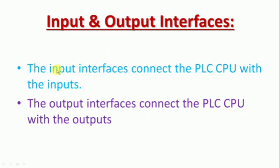Input and Output Interfaces. The output module or input module will connect the PLC to the CPU with input. The input interface will connect the PLC to the CPU to the input interface. Once connected to the output interface, AC connects the PLC to the output interface — that is the CPU to the output interface.